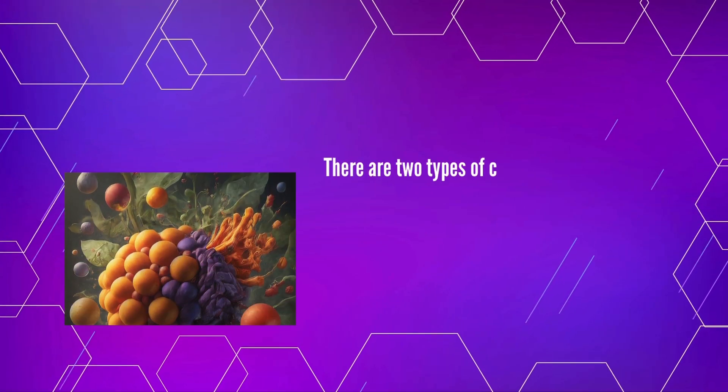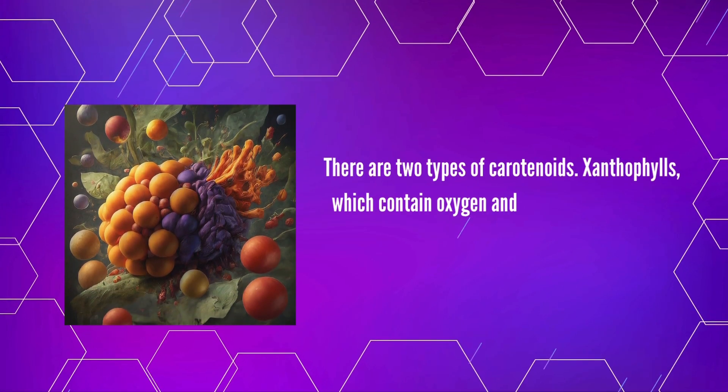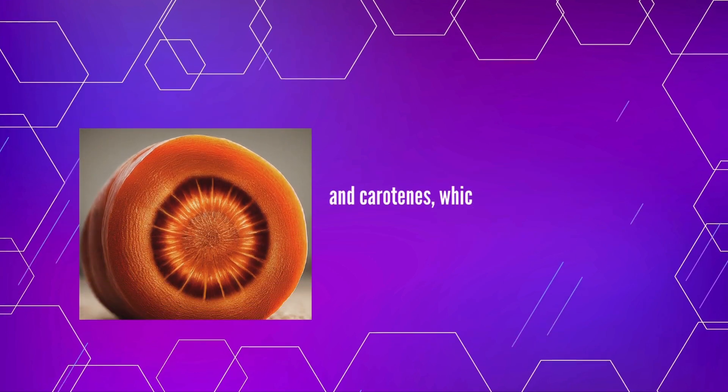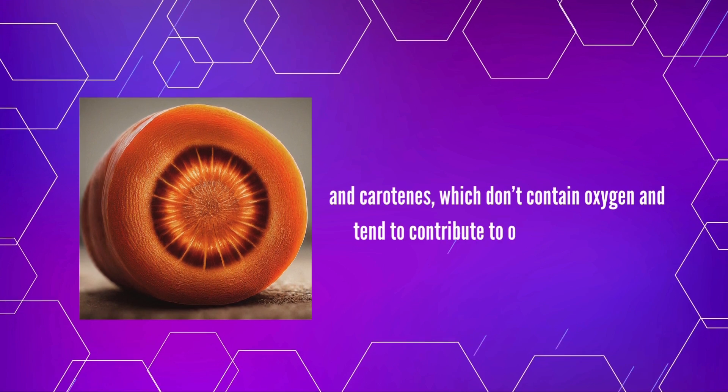There are two types of carotenoids: xanthophylls, which contain oxygen and usually contribute to yellow pigments, and carotenes, which don't contain oxygen and tend to contribute to orange pigments.